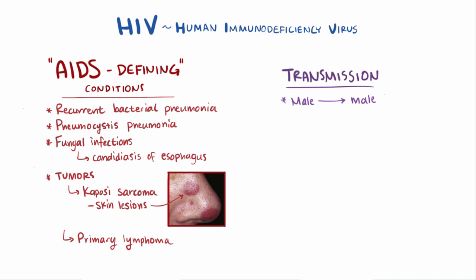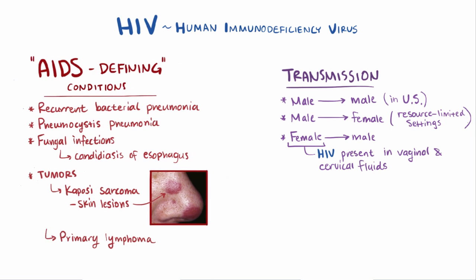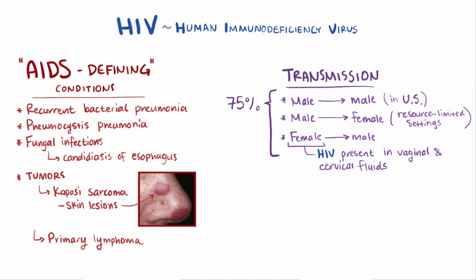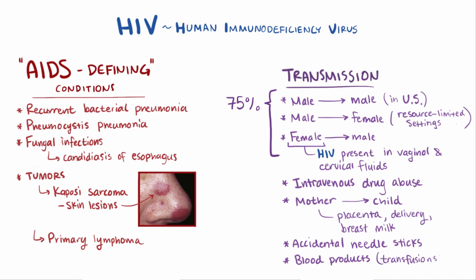Male-to-male transmission is the most common mode of transmission in the US, and male-to-female is the most common mode in resource-limited settings. Although less common, female-to-male transmissions occur as well, since HIV is present in the vaginal and cervical fluids of infected women. Over 75% of all cases of HIV are contracted from sexual intercourse. The next most common means of transmission include intravenous drug abuse and mother-to-child transmission, which can be via the placenta during delivery or via breast milk. Other, much less common modes include accidental needle sticks and use of blood products like blood transfusions.